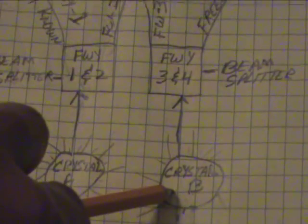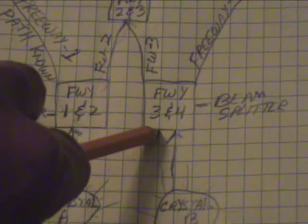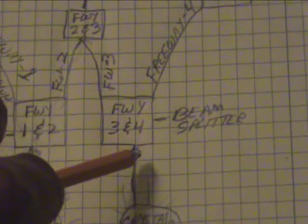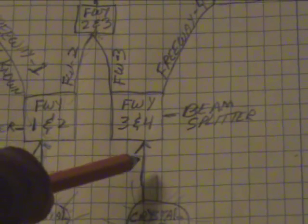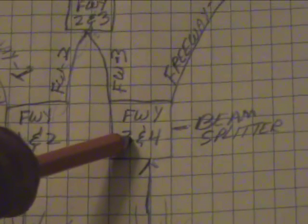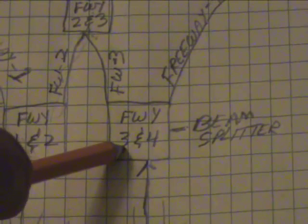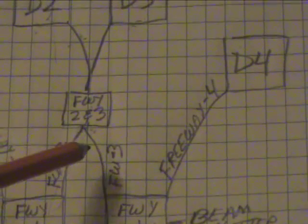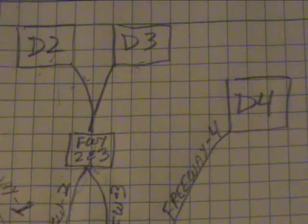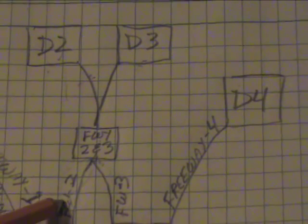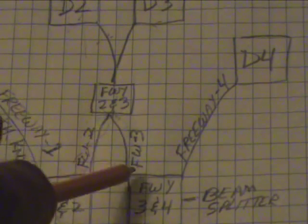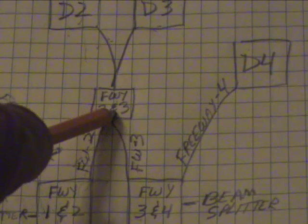When you follow that through, it hits freeway 3 and freeway 4 here. This is an intersection because this is a beam splitter. So, this beam splitter right here gives the particle a choice to either hit this beam splitter here and merge with this particle that came from freeway 2. So, these two particles end up here.